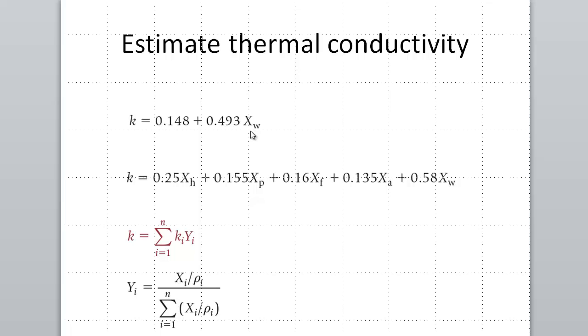In this equation, X is the moisture content given as the mass fraction. So if the moisture content of a food is 80%, then we will use 0.8 for the fraction in that equation. This expression gives us good estimates of thermal conductivity for foods with moisture content greater than 60% wet basis.